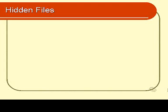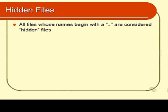This module is on what we call hidden files. Hidden files in UNIX are different to hidden files in Windows, which you may be already familiar with. A hidden file is simply a file whose name begins with a dot, a full stop. It is possible in UNIX for a file name to begin with a dot. So that's what a hidden file is.